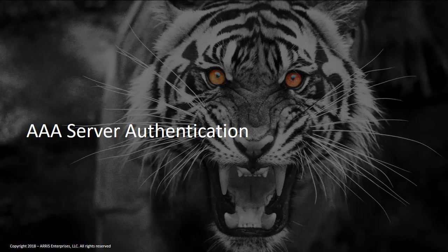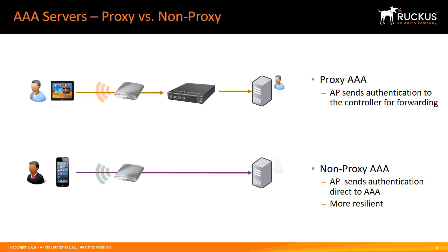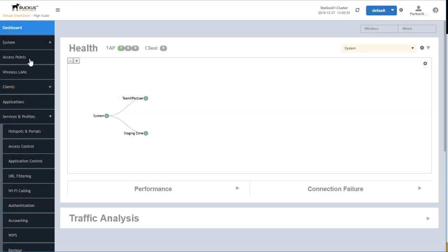AAA authentication servers. In order to understand the AAA services available in Smart Zone, you need to understand the difference between proxy and non-proxy AAA services. With proxy AAA, the authentication is managed from the controller and the controller communicates with the AAA server. With non-proxy AAA services, the authentication is managed between the access point and the AAA server directly — the controller is not part of the authentication process.